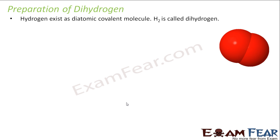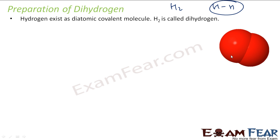Hydrogen is a covalent molecule; it is diatomic and always exists as H₂ form — one H here, one H here. Two hydrogen atoms form a hydrogen molecule, and it is called dihydrogen.